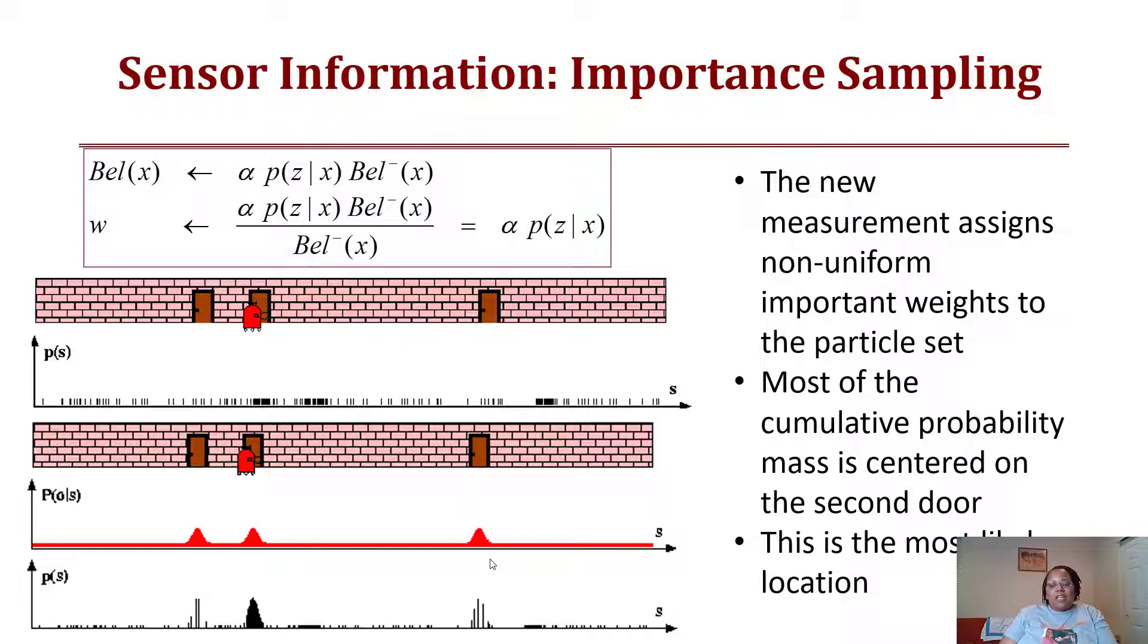Going from the first door to the second door using the motion information and sensor information, I now see that the second one is actually darker because now the cumulative probability mass is centered at the second door. That is now most likely the location.